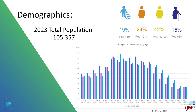We also look at the demographics. In 2023, the total population was just above 105,000. Some of the largest age ranges — 42% — are from the ages 35 to 64. You can also see subsequent age population breakdowns that we review in efforts to assess who the community is and how they might recreate in the future.